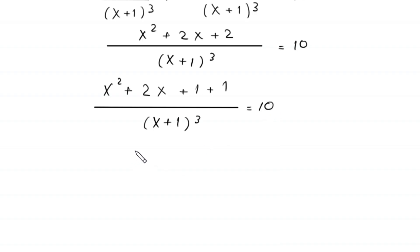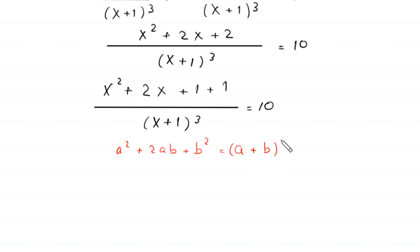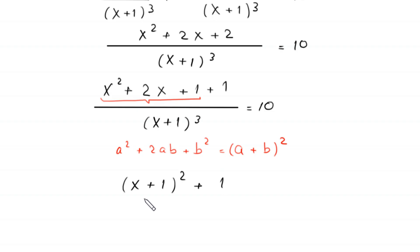Now by using the algebraic identity a squared plus 2ab plus b squared equals (a+b) whole squared, this x squared plus 2x plus 1 will become (x+1) whole squared. So the numerator becomes (x+1) whole squared plus 1, divided by (x+1) whole cubed, equal to 10.